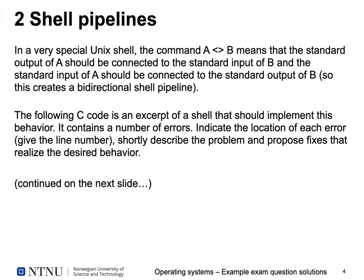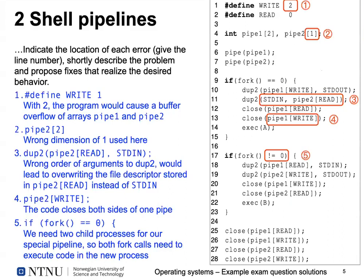I found five errors in this code, marked in red and numbered one to five. Error one: we define constants for the read and write index in file descriptor arrays pipe1 and pipe2. C arrays start at zero, so indexes must be 0 and 1. Using index 2 with arrays dimensioned that way causes a buffer overflow — you'd have to change the definition for WRITE to use the constant 1 instead of 2. A related error is incorrect dimensioning of the second pipe array, which would only have one element when it needs two.